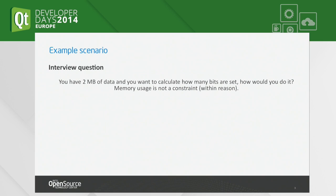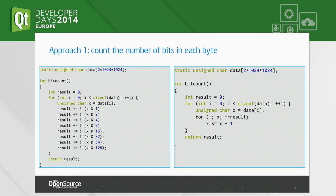Does anybody want to venture a suggestion on how to do this? Martin suggested using a table — that's a good one. Just using a table, not too large a one. Usually when people answer this, they try to do something like counting on each byte how many bits are set. That is possible; it's not difficult, but there's a lot of code. I can't tell you just by looking at it which one is faster. The left side has a lot more code than the right side; on the other hand, the right side has a loop, and between each iteration I'm actually modifying my variable.